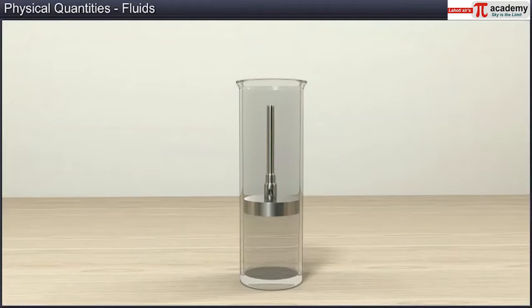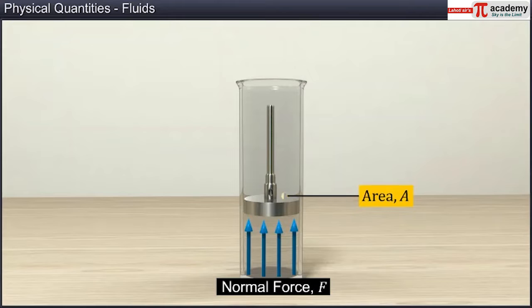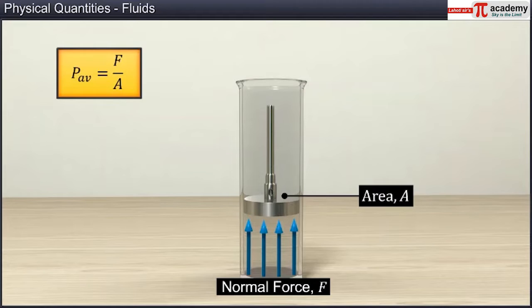Let us now learn how to determine pressure. If F is the magnitude of the normal force acting on the piston of area A, then the average pressure, P_av, is defined as the normal force acting per unit area.